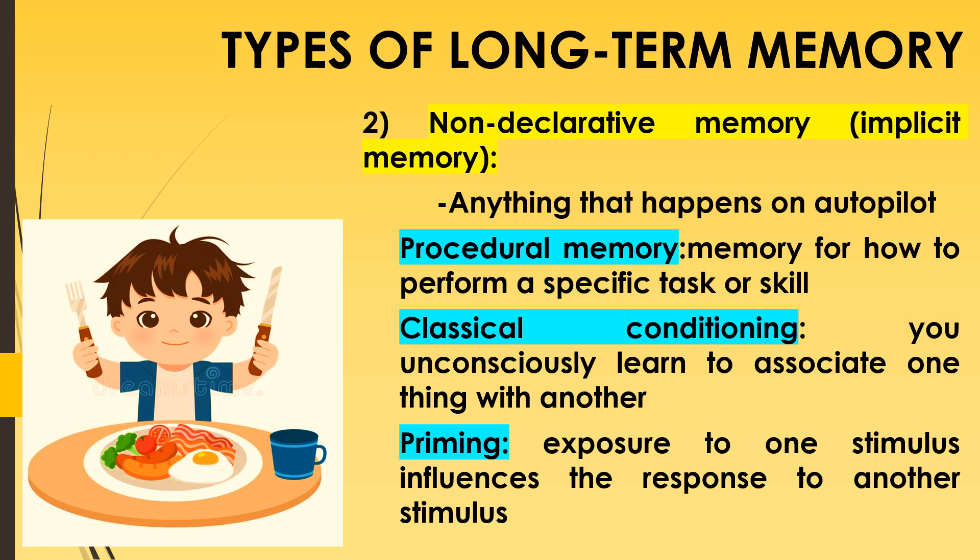The second type is classical conditioning — a type of learning in which a neutral stimulus becomes associated with a reflexive response. You have learned about Pavlov's experiment earlier, associating the sound of a bell with food; here you unconsciously learn to associate one thing with another. Another daily life example: you will have a similar reaction to hearing the unique ringtone assigned to your best friend — hearing it unconsciously puts you in a happy mood.